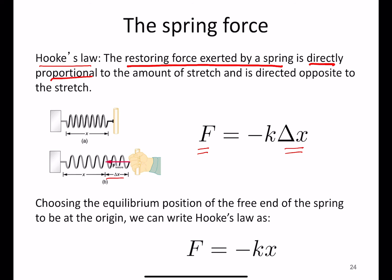Delta x is the amount that the spring has been stretched, and the constant of proportionality is k, which is always called the spring constant. The minus sign in Hooke's law tells us that the force and the stretch are in opposite directions.